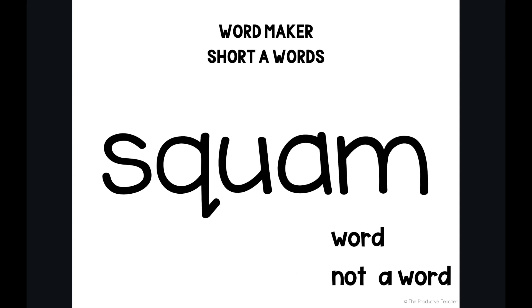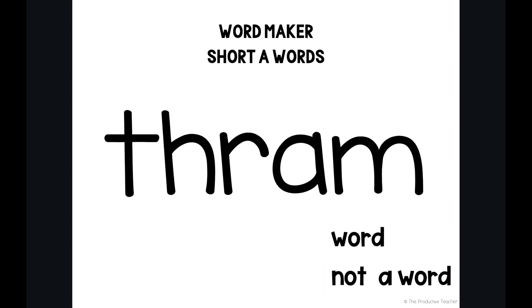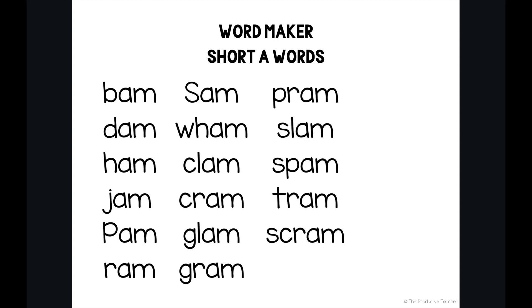Squam. Squam is not a word. Stram. Stram is not a word. Thram. Thram is not a word. Look at all of these words we made. You can continue practicing with these words until you can read them automatically. You can also work on spelling them. The nice thing about spelling words based on word family is you already know how all the words end — you're just changing the onset. Thanks so much for practicing today and we'll see you next time.